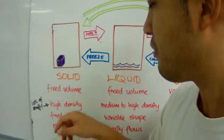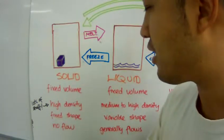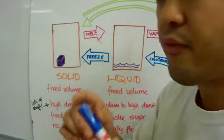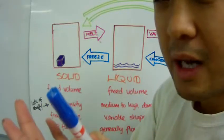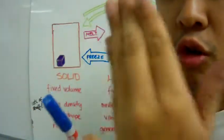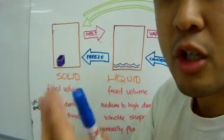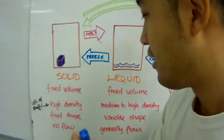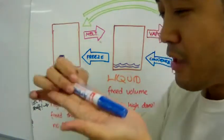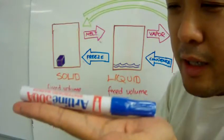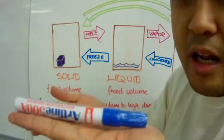Also, solid has a fixed shape. It will always look like this until you really hit it very hard. And also, solid does not flow. You can put it here and nothing happens — it just stays there.